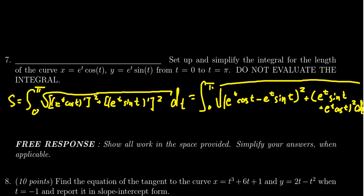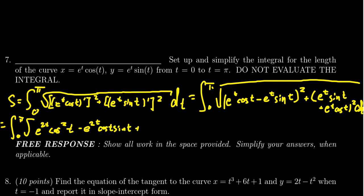We're going to FOIL each of those squared expressions. FOILing the first one, you end up with e to the 2t cosine squared t, then negative 2e to the 2t cosine t sine t, and then e to the 2t sine squared t. Notice we have a cosine squared and a sine squared — those combine to give cosine squared plus sine squared equals 1. Since both terms are multiplied by e to the 2t, we just get e to the 2t.